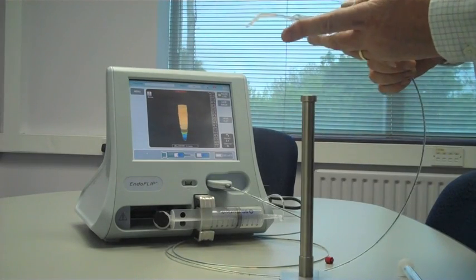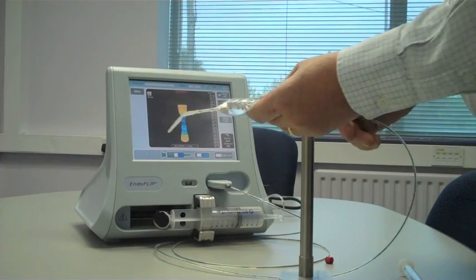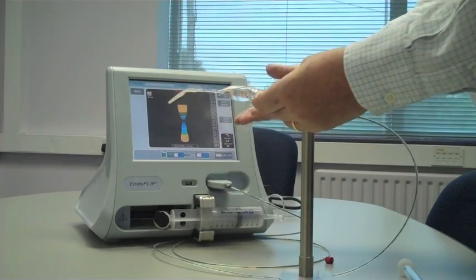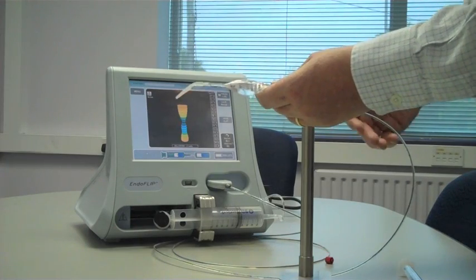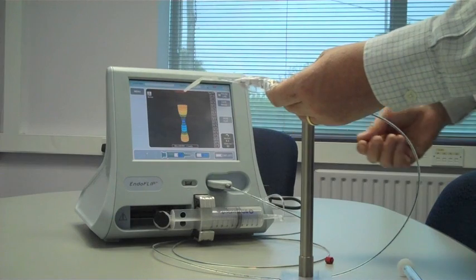So the default is 30mm. As you can see, when we squeeze the balloon, the shape of the esophagus or GEJ is clearly seen on the screen.